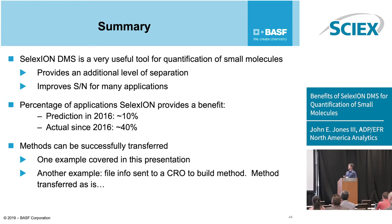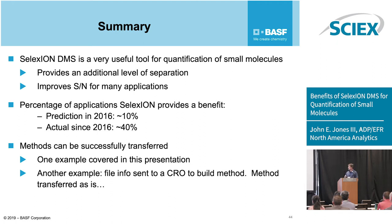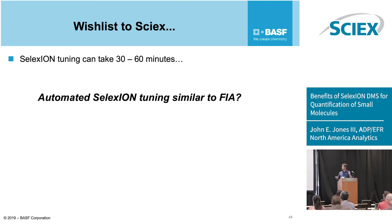In summary, SELEXION is a very useful tool for the quantification of small molecules. It provides an additional level of separation, and it improves signal-to-noise for many applications. The percentage of applications that benefit: I predicted 10% and was way off — since 2016 it's been about 40% of applications. Methods can be successfully transferred; we showed that by sending it to a CRO. Most recently, a couple of months ago I did the SELEXION work, sent the DAM file and method information, they typed it in at the contract lab, it worked as-is, and they had results on Monday. Wish list for SCIEX: SELEXION tuning can take 30 to 60 minutes — some sort of automated check-and-optimize workflow would be welcome.